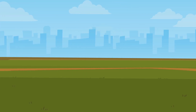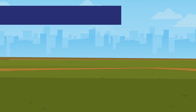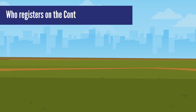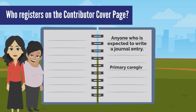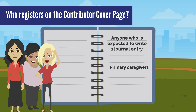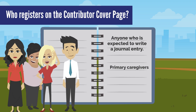First, let's decide who registers on the contributor cover page. This is basically anyone who is expected to write a journal entry, such as primary caregivers, which are your informal caregivers, such as neighbors and drivers.